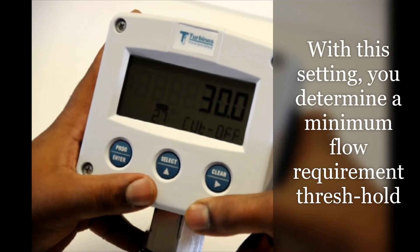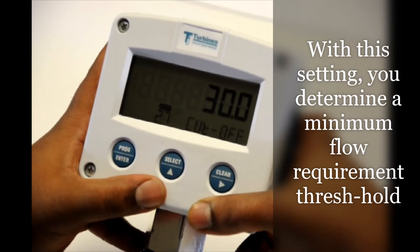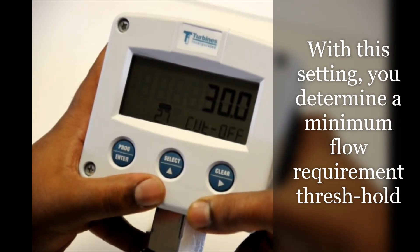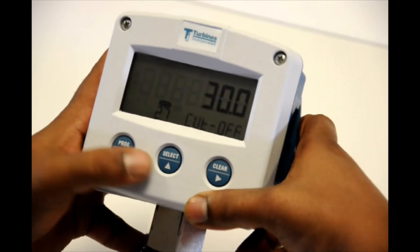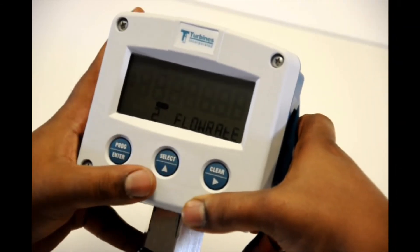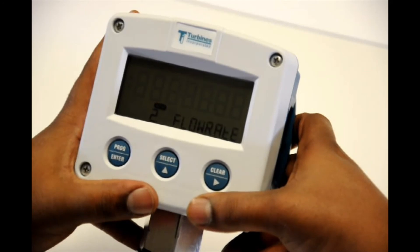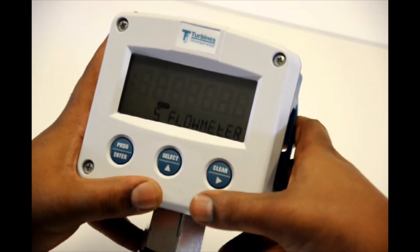Now this is your threshold cut off for the meter. It's thirty point zero. It's pretty standard across the industry so you want to leave it as is. So from here you're going to hit select. Now we have one more step before we get done. You're going to hit clear so you get to five flow meter.